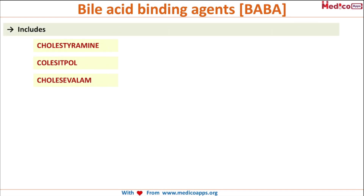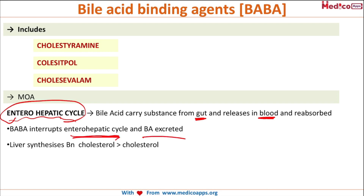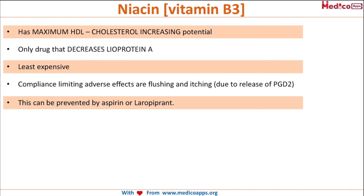The next class is BABAs — bile acid binding agents — which include cholestyramine, colestipol, and colesevelam. Their mechanism involves interrupting the enterohepatic circulation: bile acid carries substances from the gut and is reabsorbed into the blood, and these agents interrupt that cycle, causing excretion of bile acid. They are the drug of choice in children and pregnancy because they are safe. Cholestyramine and colestipol are not easily palatable, so colesevelam, which can be taken orally, is preferred.